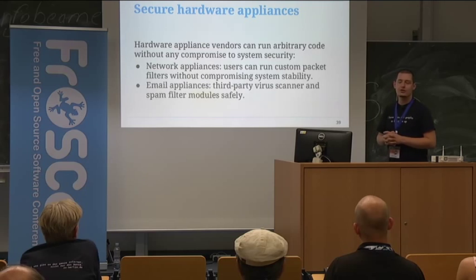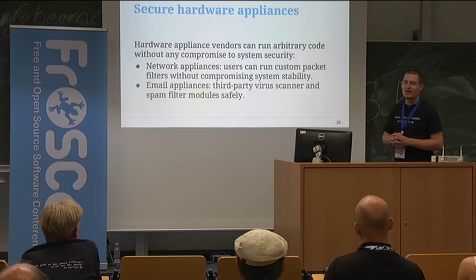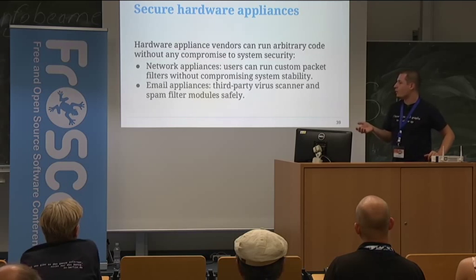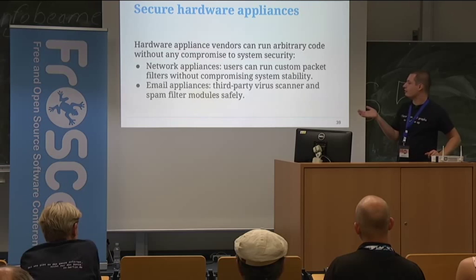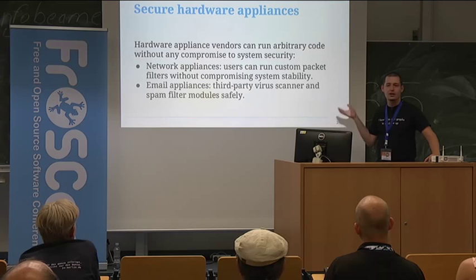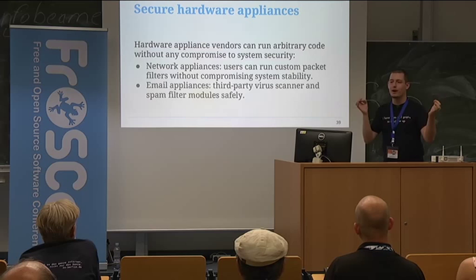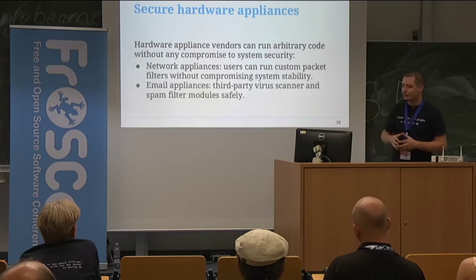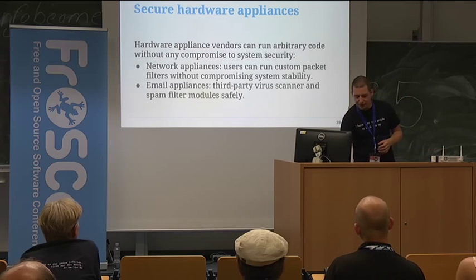In FreeBSD there exists a technology called netmap that allows you to efficiently do firewalling in user space — it's a sort of lockless queue in which network packets are exposed to processes, and the processes can apply filtering or discard packets. This would allow people to just write filtering libraries, and if there's a security exploit in one, the appliance as a whole is not compromised. I've also worked for a company that made email spam filtering appliances and used a binary blob component to do the spam filtering — which is really bad because if there's a security exploit in that spam filter, there's nothing you can do. What if that virus scanner vendor supplied their scanner as a Cloud ABI executable that would only take one pipe for incoming email and one pipe for outgoing email? That would make it a lot more secure.